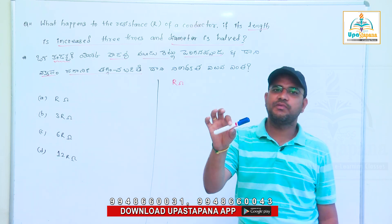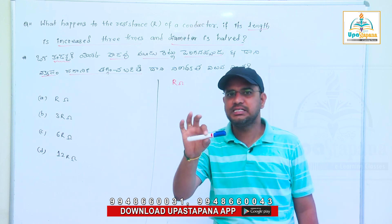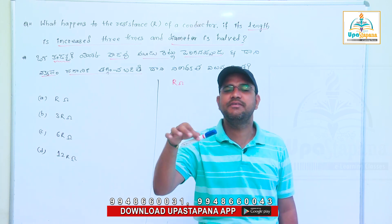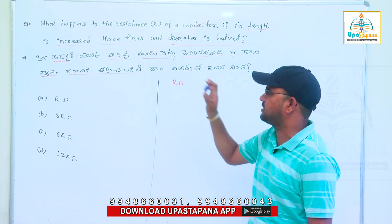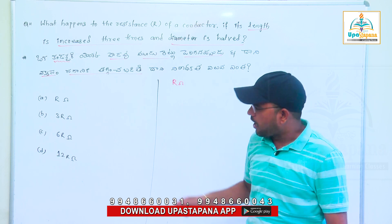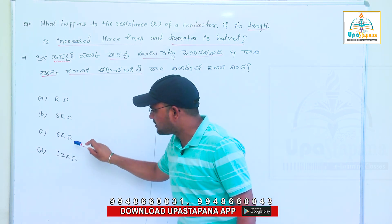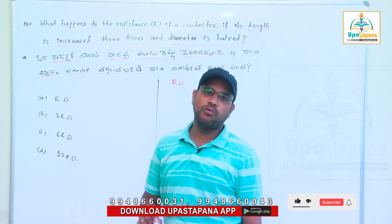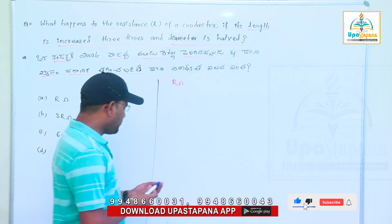The design is a resistance. This is the question. Option A: R ohm, Option B: 3R, Option C: 6R, Option D: 12R ohm.